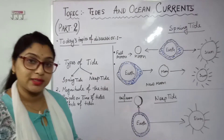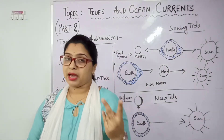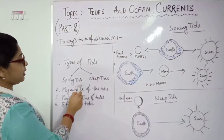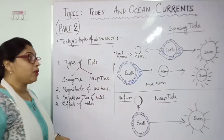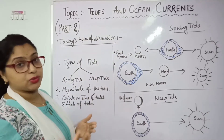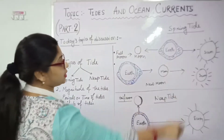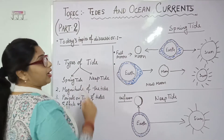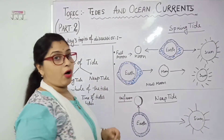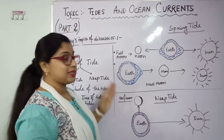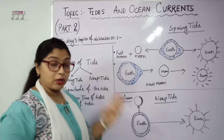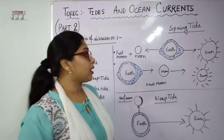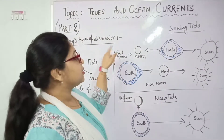Tides basically have two main types: one is spring tides and another is neap tides. Here I have written spring tides and neap tides. Now, by seeing the diagram, this is a very important diagram you have to also practice. In spring tides, two positions can be there of these three celestial bodies — sun, earth, and moon — and they will always be in a straight line.